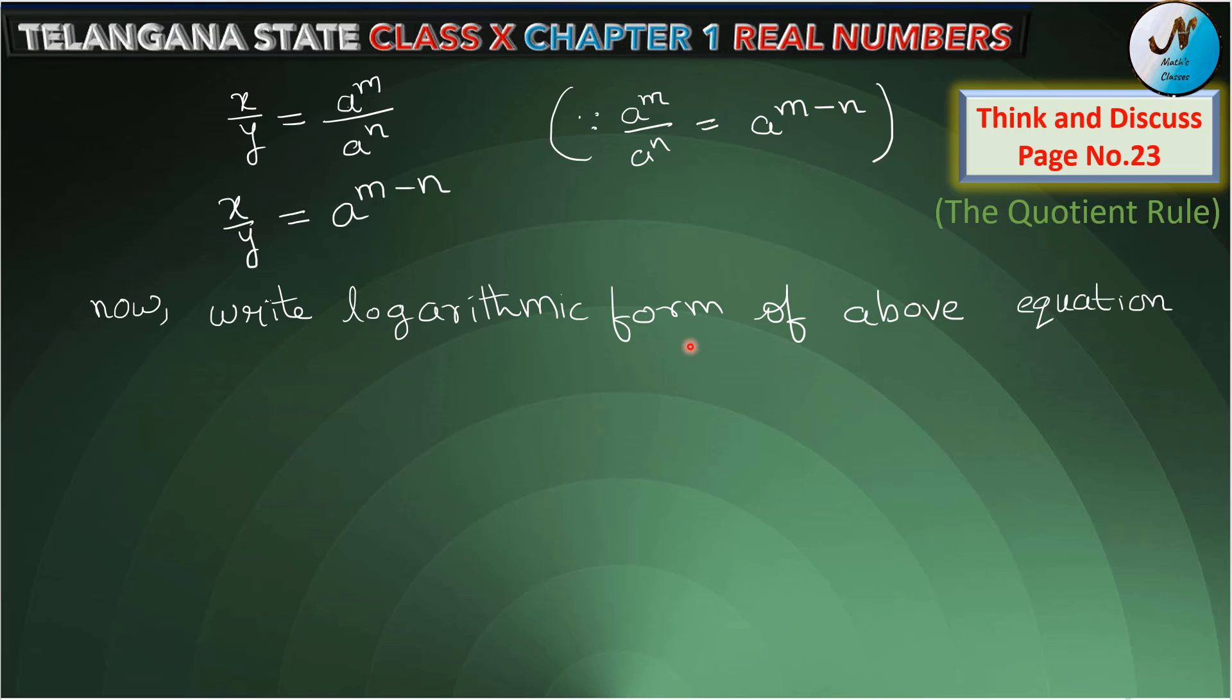Now we write logarithmic form of above equation. Then we can write the above equation as log x by y base a is equal to m minus n. Now we substitute m and n values from equation 1 and 2 in above equation.